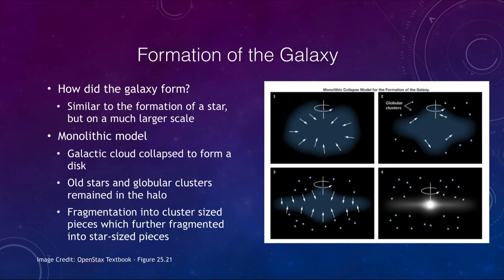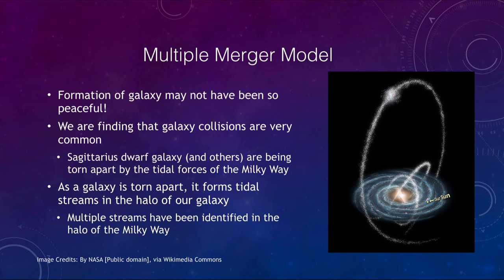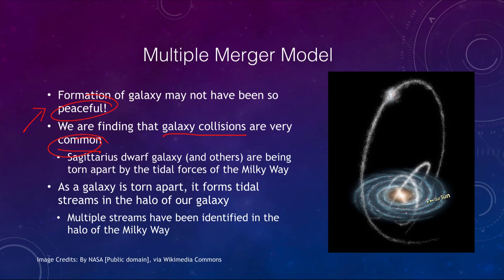Another way of thinking about this is what we call the multiple merger model, where there may not have been a peaceful formation of the galaxy. What we have been finding is that galaxy collisions are incredibly common — they occur all the time. For example, our Sagittarius Dwarf Galaxy and some others are actually being torn apart by the tidal forces of our Milky Way galaxy.